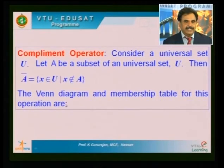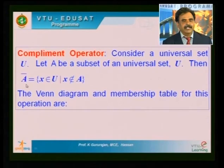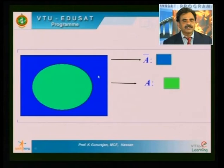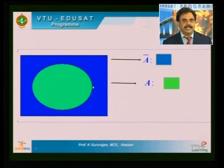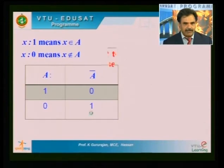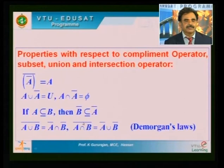The complement operator: all elements not in A. Whenever X does not belong to A, X belongs to A complement. In the Venn diagram, the universal set is the rectangle and A is colored green; all portions outside A contribute to A complement. From this, A union A complement equals the universal set U, and A intersection A complement is the null set. In the membership table: 1 moves to 0, and 0 moves to 1.